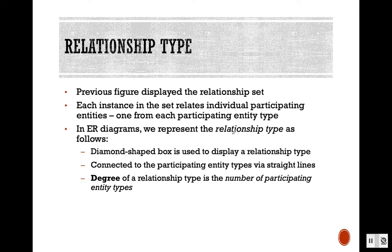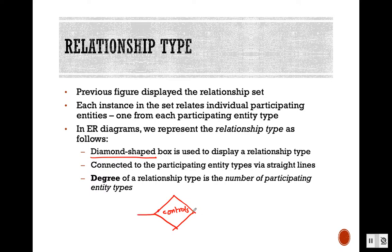In an ER diagram, we represent the relationship type using a diamond-shaped box. We write the relationship name inside this diamond box — for example, 'controls'. Each relationship connects multiple entity types, and we use straight lines to show the connections. The degree of relationship type is the number of participating entity types; if two entity types participate, it's a binary relationship.